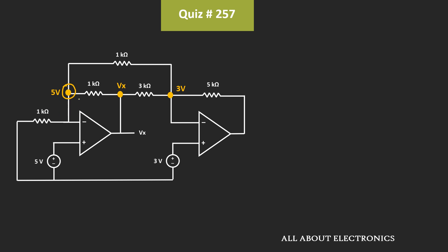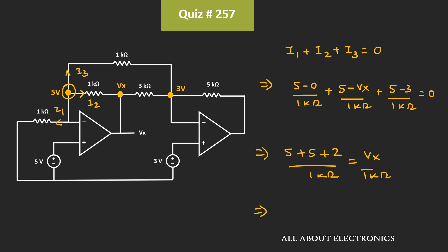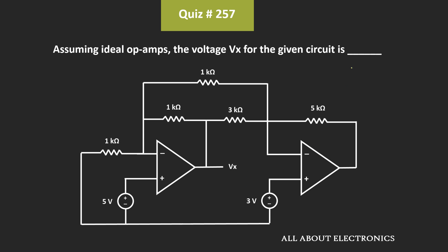At this node, 3 currents are leaving the node. Let's say this current is equal to I1, this current is equal to I2, and this current is equal to I3. Applying the KCL, we can write: I1 + I2 + I3 = 0. That means (5V - 0) / 1kΩ + (5V - Vx) / 1kΩ = 0. That means 5 + 5 + 2 divided by 1kΩ is equal to Vx divided by 1kΩ. So this voltage Vx is equal to 12V. In this way, we got the value of Vx as 12V.